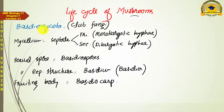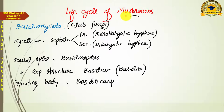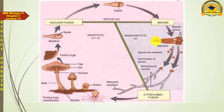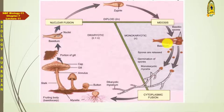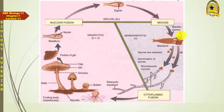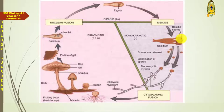Mushroom belongs to Basidiomycota, so let's see how the mushroom life cycle proceeds. The life cycle of mushroom begins with the germination of basidiospores. Basidium is the singular word and basidia is the plural. These thick rod-shaped structures produce four haploid sexual spores on their tip by means of meiosis — these spores are called basidiospores.